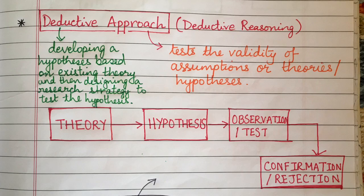As seen in the flowchart, the deductive approach moves from theory to hypothesis, then to observation or testing, and finally to a conclusion based on whether the hypothesis is confirmed or rejected. Studies using the deductive approach generally follow these stages: first, deducing a hypothesis from theory.